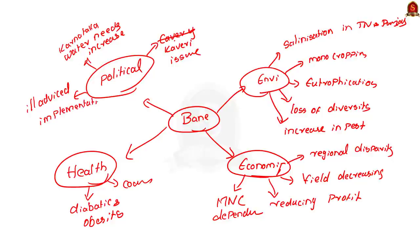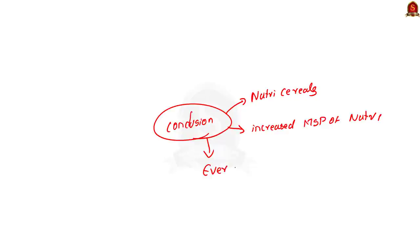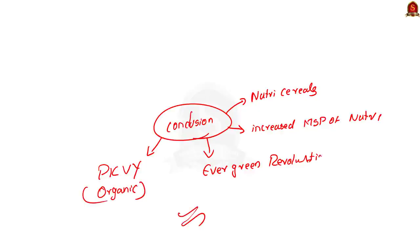I may have missed some points — if you have any to add, post them in the comment section so other aspirants can also benefit. For the conclusion, you can mention various steps taken by the government to move away from the rice-wheat system: rebranding coarse cereals as Nutri-Cereals, increasing MSP for Nutri-Cereals, the Evergreen Revolution proposed by Dr. M.S. Swaminathan, the Paramparagat Krishi Vikas Yojana promoting organic farming, and the Umbrella Scheme — the Green Revolution Krishonati Yojana launched in 2005. With this, let us conclude the main question discussion and take up the first news article.